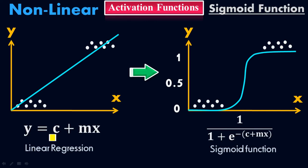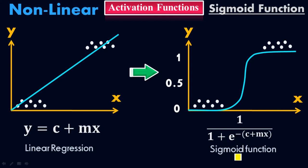From a mathematical perspective, the equation for the linear graph is y equals c plus mx. When I apply the sigmoid function, I take that expression and put it in: 1 over 1 plus e to the negative of (c plus mx). This produces the sigmoid curve. If you skip activation functions in deep learning hidden or output layers, the model remains a simple linear model.